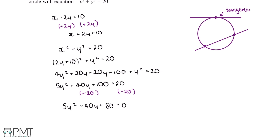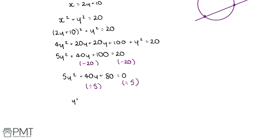There are a few different ways to solve this equation, such as using the quadratic formula or factorising. To make it easier to factorise, we can divide both sides by 5. This gives us y squared plus 8y plus 16 equals 0. We need two numbers that add to give 8 and multiply to give 16: that's 4 and 4. So we can factorise this into y plus 4 multiplied by y plus 4, which simplifies to y plus 4 all squared.